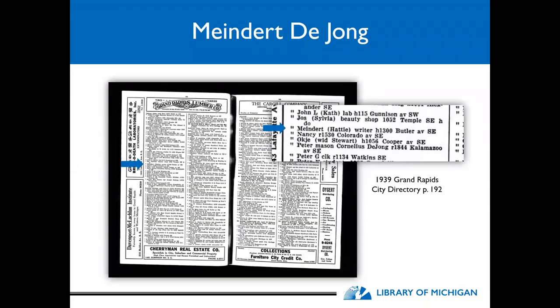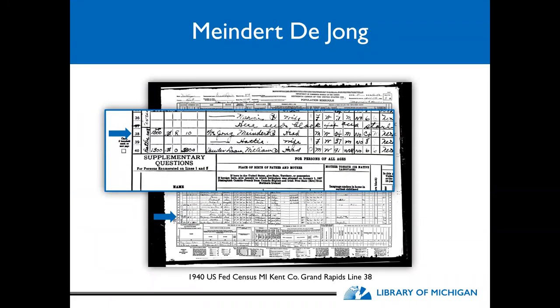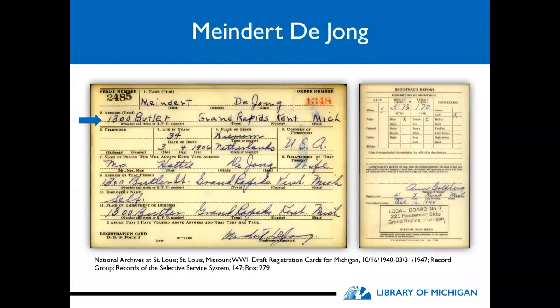So back to Sanborn maps. Looking at the 1939 Grand Rapids City Directory, we can see that Mr. DeJong was living at 1300 Butler Avenue Southeast in Grand Rapids, along with his wife Hattie. That same address is confirmed in the 1940 census, also listed as 1300 Butler, as well as on his draft registration card from World War II, also listing 1300 Butler, Grand Rapids, Michigan.